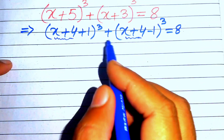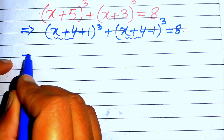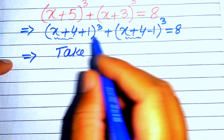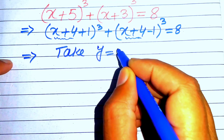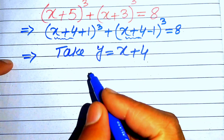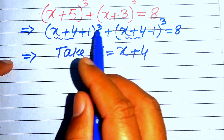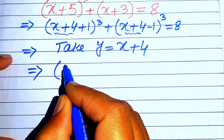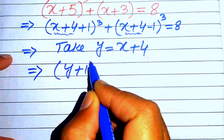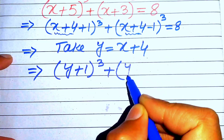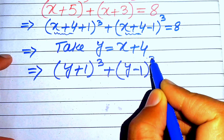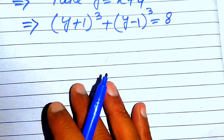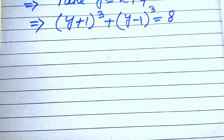Now we see that (x+4) is the common term on both sides of the left-hand side. So we let y = x+4, and substitute into the equation. Our equation becomes (y+1)³ + (y−1)³ = 8.